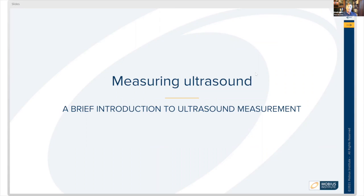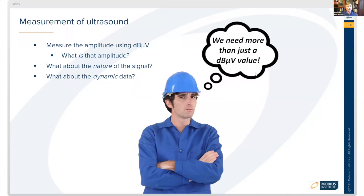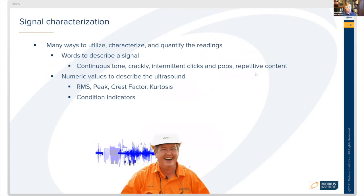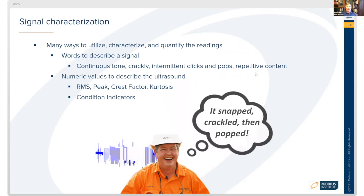Now let's talk about measuring ultrasound — this is a brief introduction to ultrasound measurement and all the different types of information you can get. With ultrasound, what we're measuring is the amplitude using decibel microvolts. We want to see what the decibel amplitude in microvolts is, what the nature of the signal is, and what about the dynamic data. We need to know more than just the individual decibel microvolt value — we want to see what the pattern looks like. There are many ways we can characterize and quantify these readings.